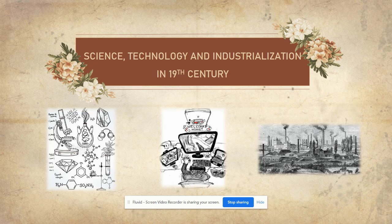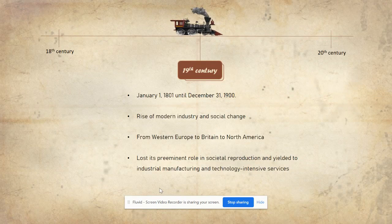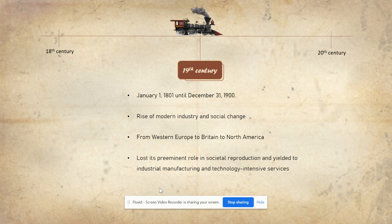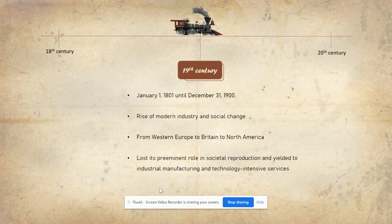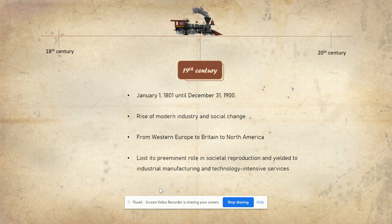Before we go deeply into this topic, I would like to explain a bit about the 19th century. The years for the 19th century are from January 1, 1801 until December 31, 1900. The 19th century is also known as a rise of modern industry and social change, because in this century there were a lot of inventions that changed old to new ways. This revolution started from the end of the 18th century until the early 20th century. Society was also affected, such as slavery being abolished. This revolution spread from Western Europe to Britain, then to North America, before spreading to more countries.